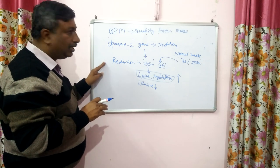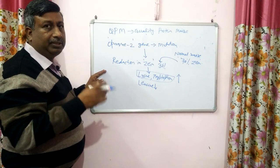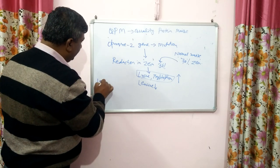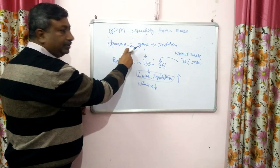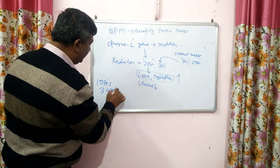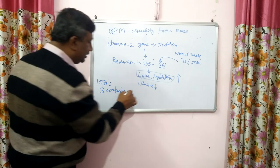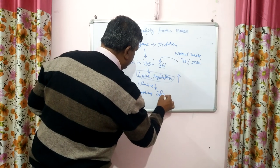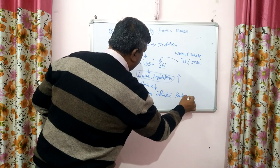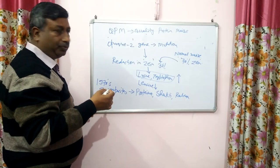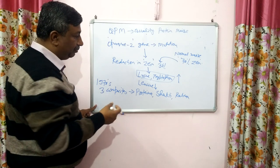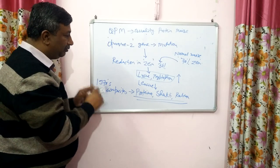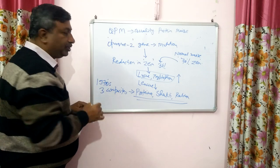The opaque-2 gene was responsible for this. There was another gene called floury-2, but it was not as successful. Maximum success came with the opaque-2 gene. In the 1970s, using this opaque-2 gene, three composites were released — namely Protein, Shakti, and Ratan — with lysine content about 3.5 to 4% and tryptophan about 0.7%. These are known as QPM composites. However, their yield level was lower.